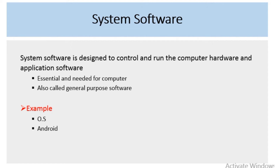Examples of system software include the Operating System (OS) such as Android, Linux, and Microsoft Windows. These are all examples of system software.